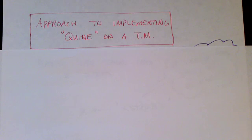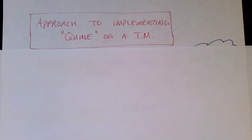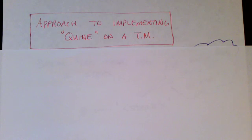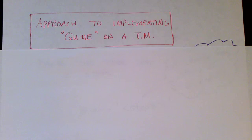In the previous video we talked about a couple of different ways of creating a program that prints a copy of itself. In the first approach, the program just accessed the memory containing the instructions as data, and that was the easiest way to do it. In the second approach, we created a Quine program that didn't use the technique of accessing its executable code as data, but instead actually contained as data the characters that represented itself.